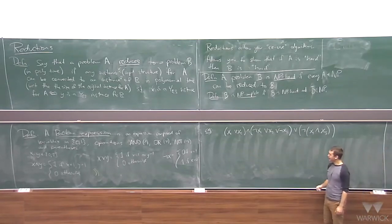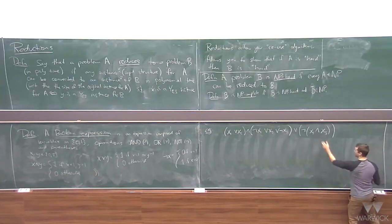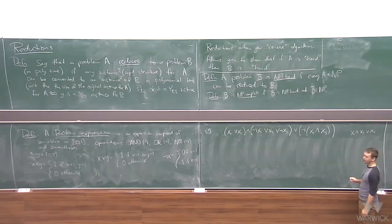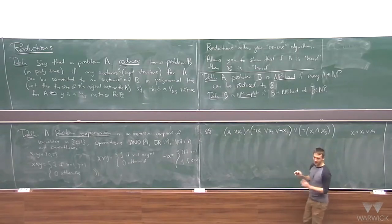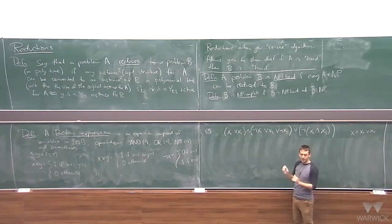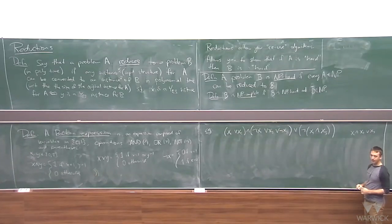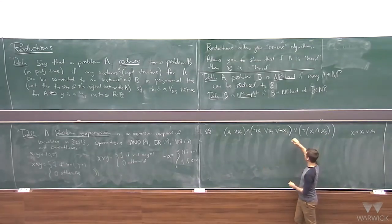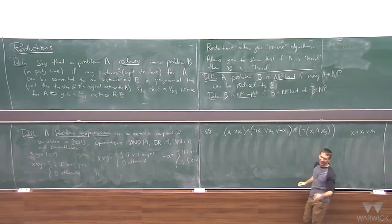There was a question about ambiguity when mixing AND and OR without parentheses. If you write x1 AND x2 OR x3, that's ambiguous. You should use parentheses to make it clear. For the expression on the board, there was a correction — I meant to put an AND there, not an OR. Apologies for that.